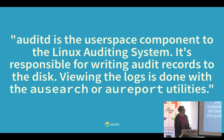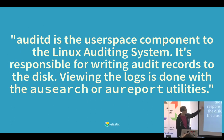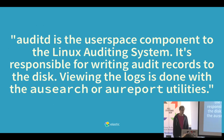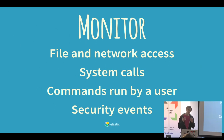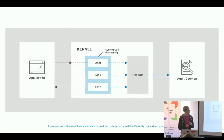AuditD is for auditing kernel events and user space events. It basically writes the auditing events so you can see them — you have auSearch and auReport to see what your system is up to. You can define various rules for what you want to monitor: file access, network access, system calls, stuff that users were running successfully or unsuccessfully. All of that can be audited, and you can figure out what has been going on.